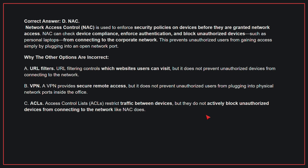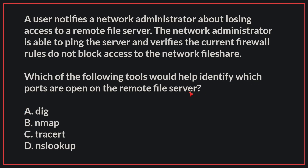This prevents unauthorized users from gaining access simply by plugging into an open network port. Why the other options are incorrect: A, URL Filtering controls which websites users can visit, but does not prevent unauthorized devices from connecting to the network. B, a VPN provides secure remote access, but does not prevent unauthorized users from plugging into physical network ports inside the office. C, ACLs restrict traffic between devices, but do not actively block unauthorized devices from connecting to the network like NAC does. Therefore, the correct answer is D, NAC.